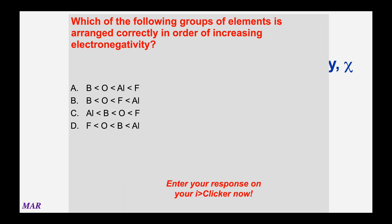Which of the following groups is arranged correctly in order of increasing electronegativity? Electronegativity increases up and to the right, so you want the most down-and-left atom to start. Fluorine is the most electronegative element, so the answer has to include fluorine at the end. Looking at the periodic table: aluminum is under boron, so aluminum would be first, then boron, then oxygen more to the right, then fluorine the most electronegative of all — answer C.